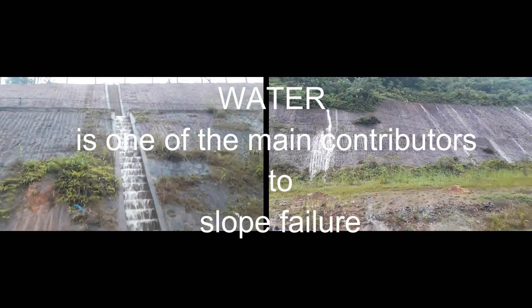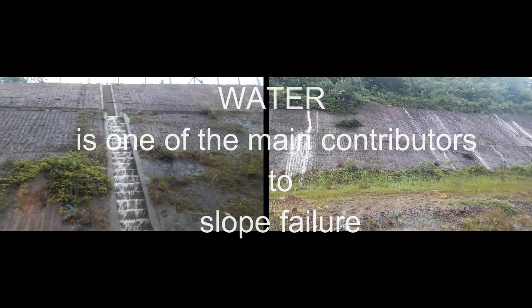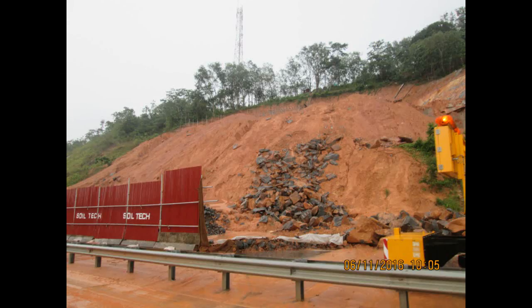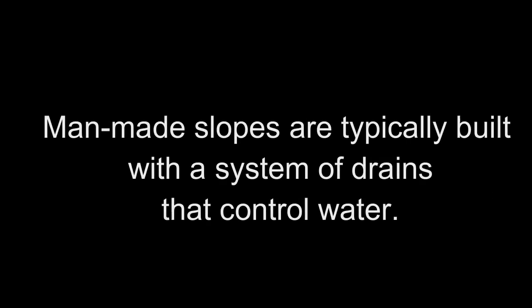Water is one of the main contributors to slope failure. Man-made cut slopes shall be protected by controlling storm water flow. To avoid slope failures, if not properly controlled by providing a drain system, it may result in devastating slope failures. Man-made slopes are typically built with a system of drains that control water.